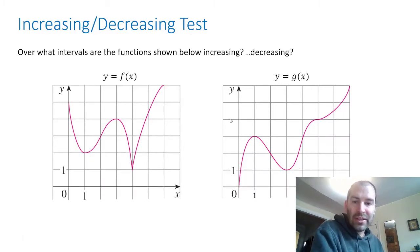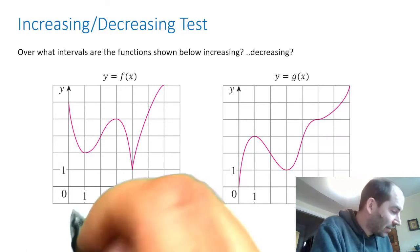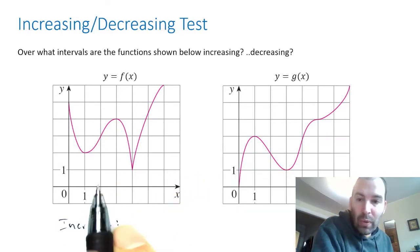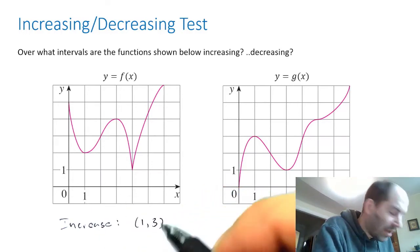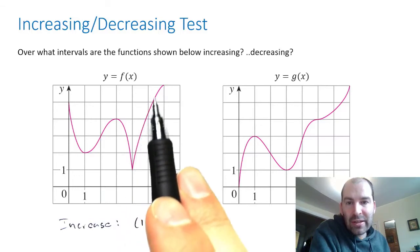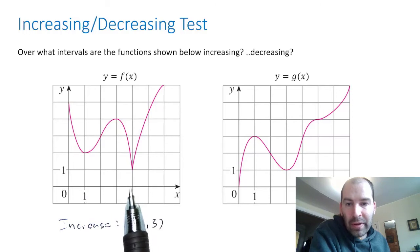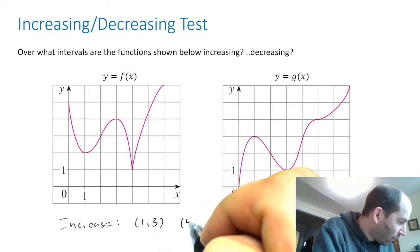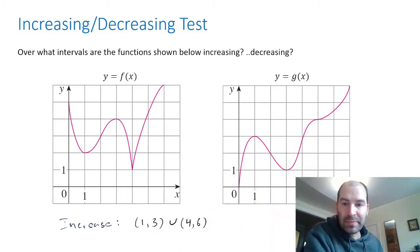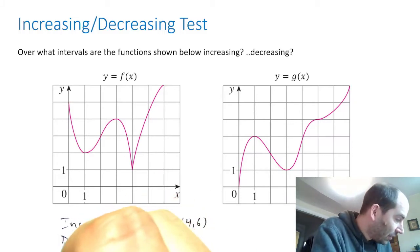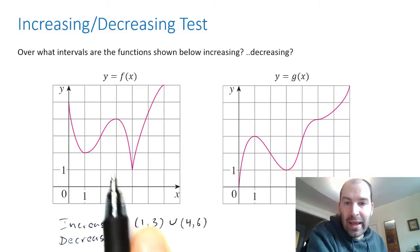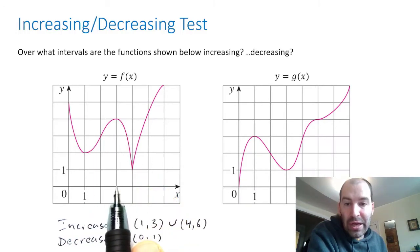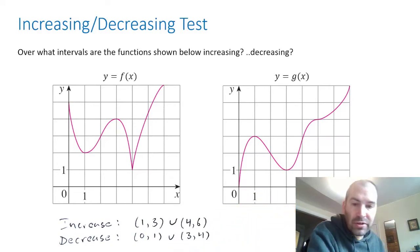The intervals of increase and decrease for f of x: the intervals of increase are from one to three, and also from four to six. Whenever I want to join two intervals together, I use the union symbol. For decrease, it's going down on the interval zero to one, and from three to four. Those are the intervals of decrease.